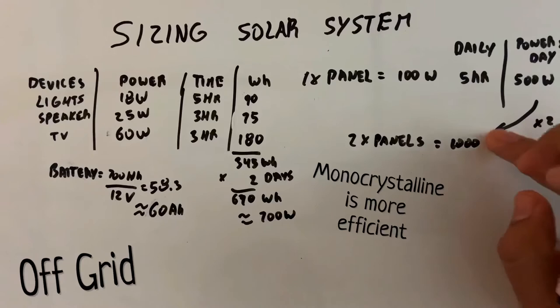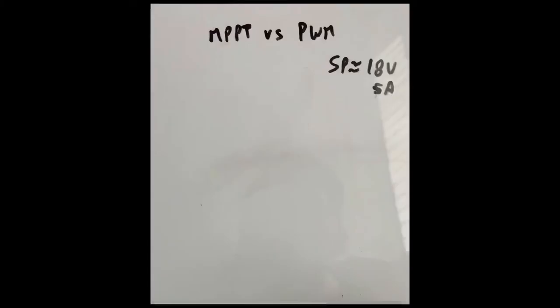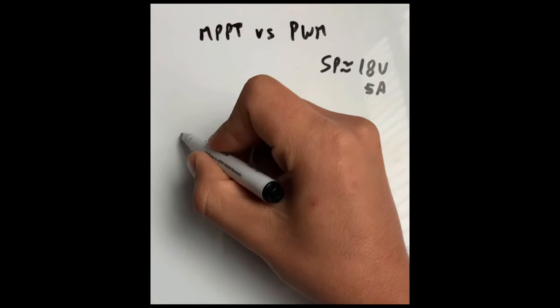Now we're going to talk about charging controllers. There's two types, the MPPT and the PWM. The MPPT is more expensive, but it's way more efficient.